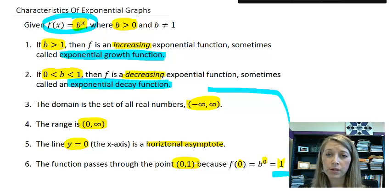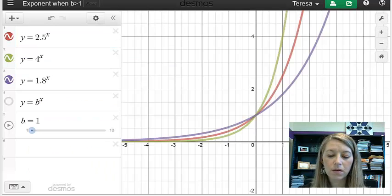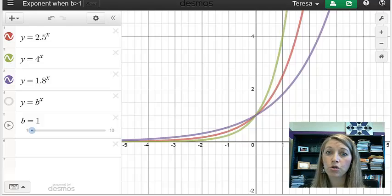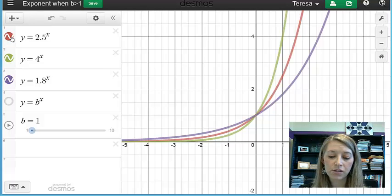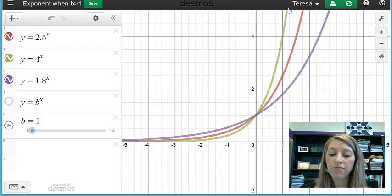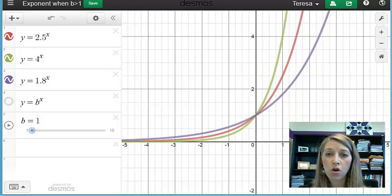So let me show you some actual examples of different graphs that fit these formats here. So here you see I have exponential growth functions because these are increasing from left to right. And you can see the different variations of it. So my red graph is 2.5, my green graph is 4, my blue graph is 1.8. So we see that they fluctuate a little bit here on the left, but more importantly on the right, the higher the number, the faster it grows exponentially.